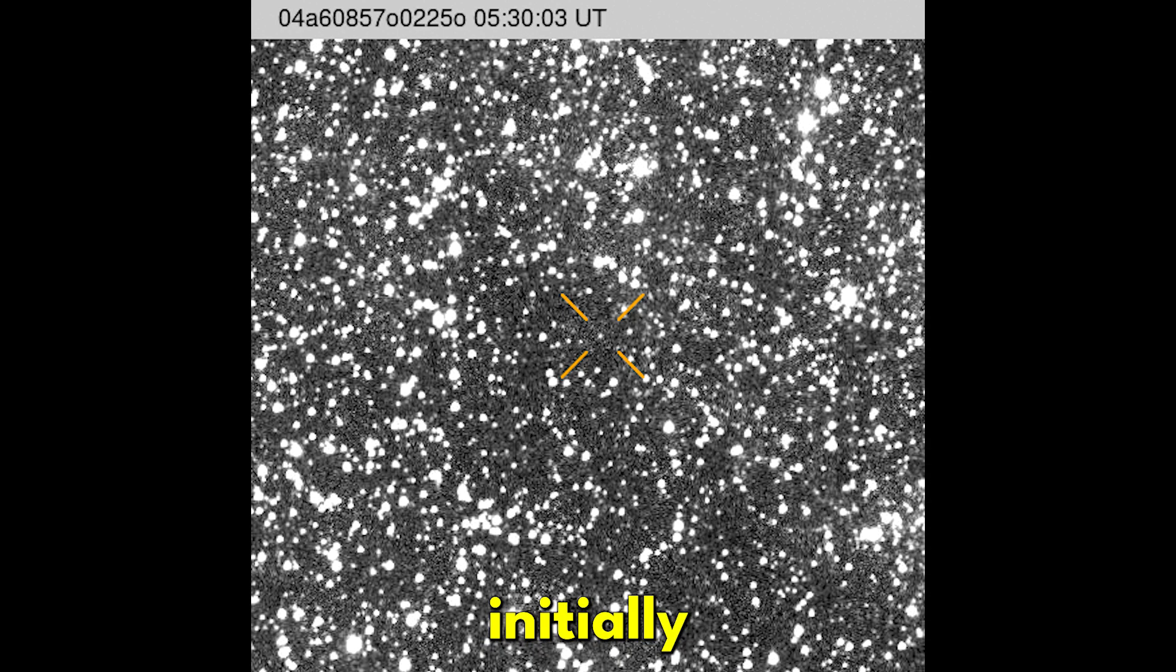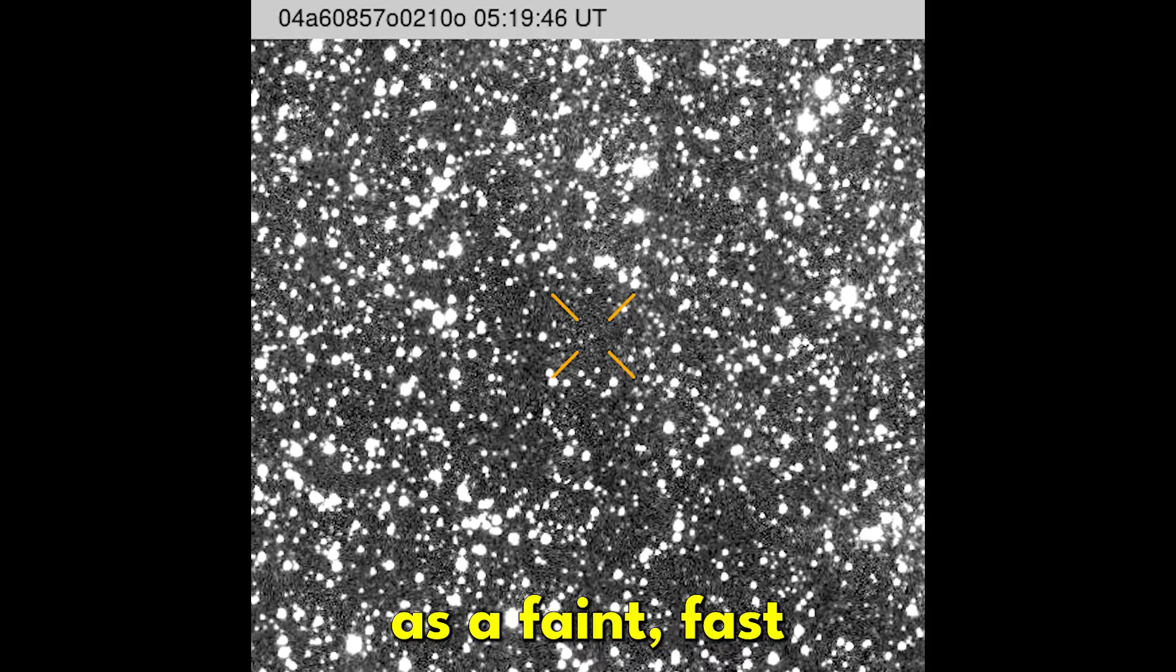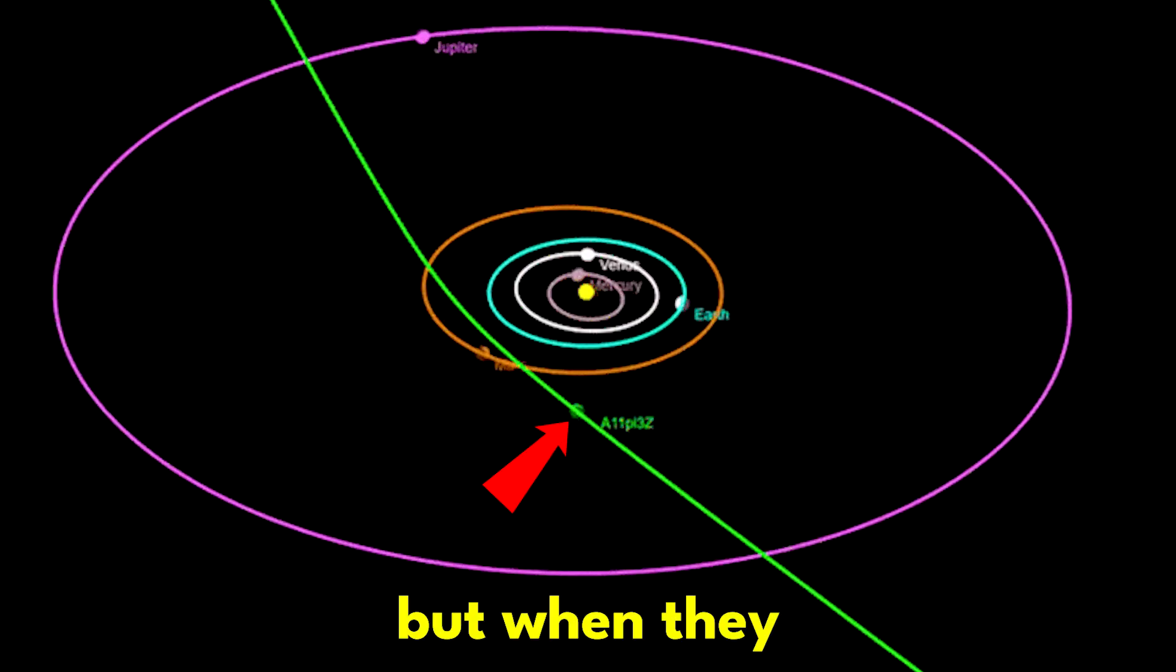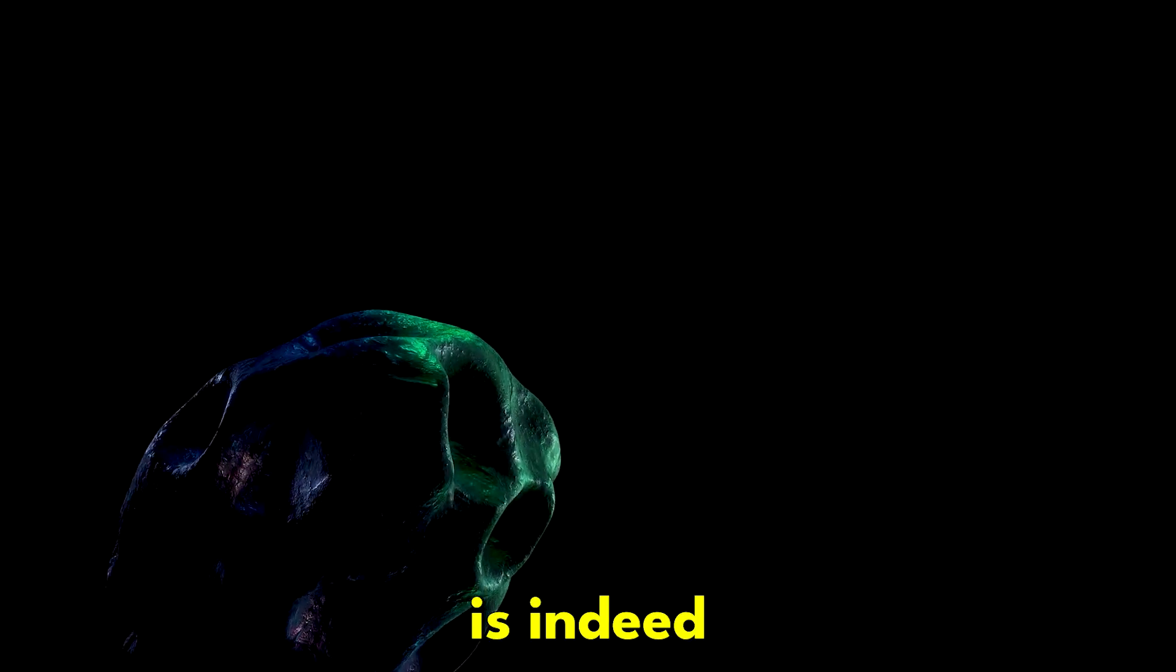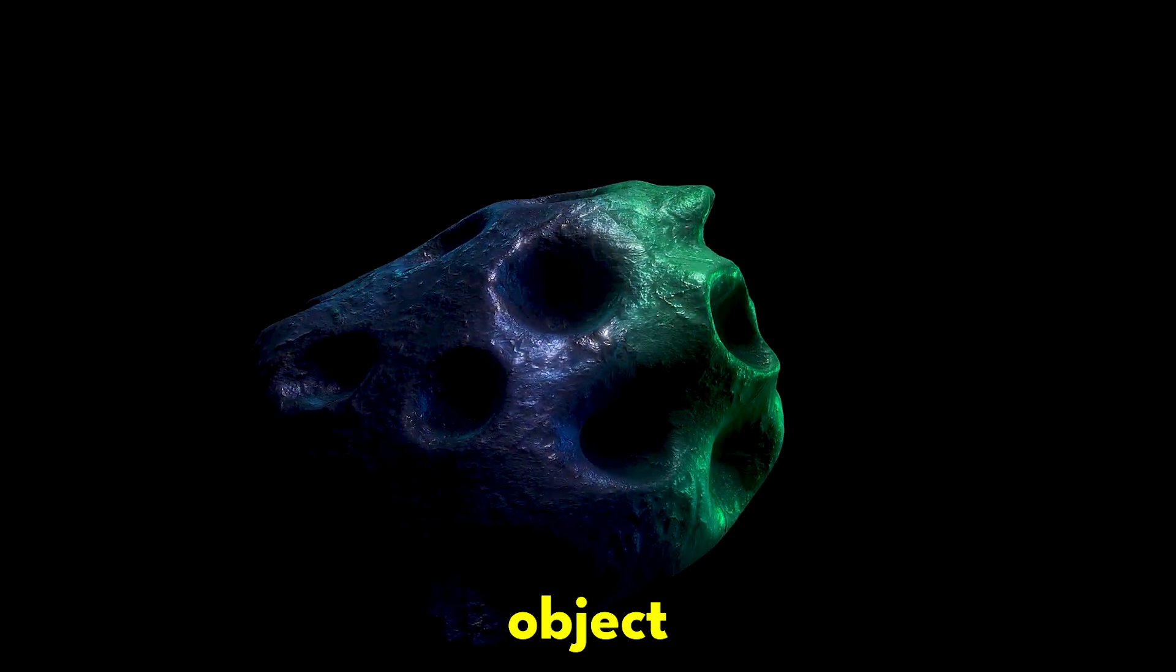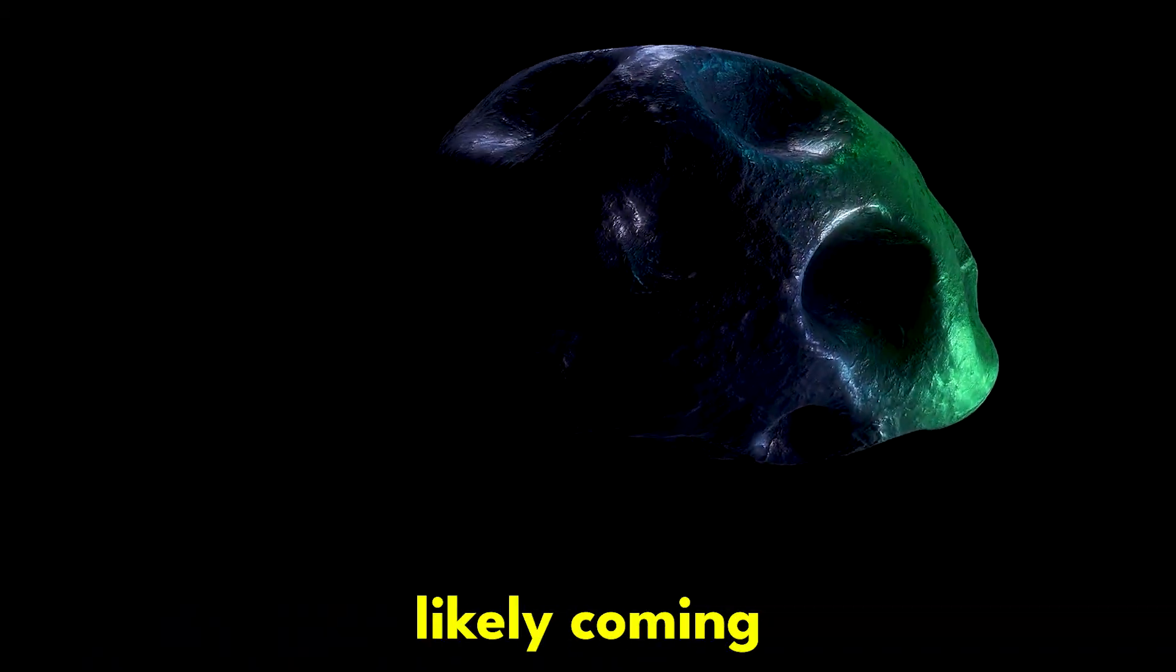This object initially appeared as a faint, fast-moving point of light, but when they calculated its trajectory, it became clear that it is indeed another interstellar object from deep space, likely coming from another star system.